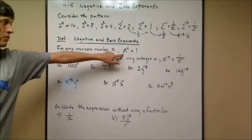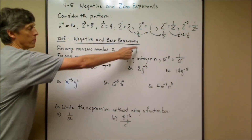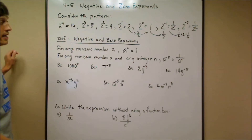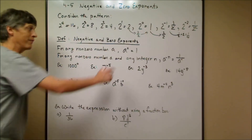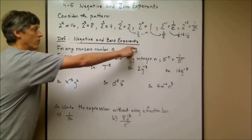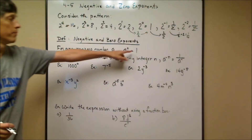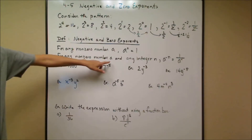That pattern is explained by this definition — negative and zero exponents. For any non-zero number a, a to the zero power is always 1. So 10^0 = 1, 100^0 = 1, (−100)^0 = 1, (−1/2)^0 = 1. Any non-zero number raised to the zero power is 1. If you're wondering what 0^0 is, wait until calculus.